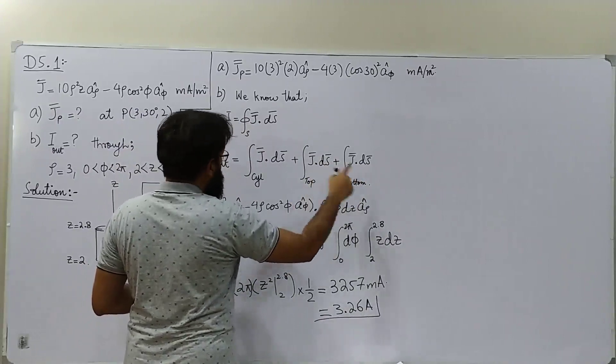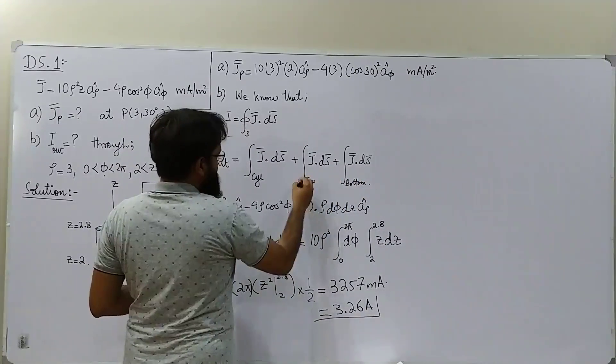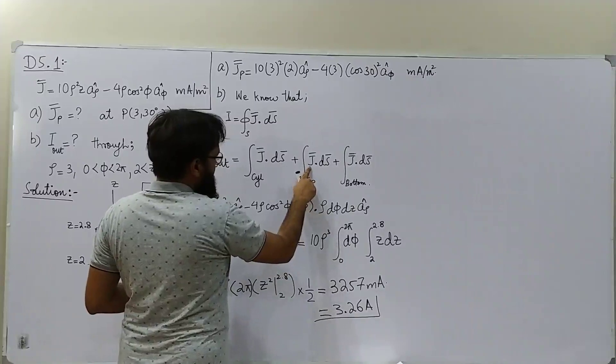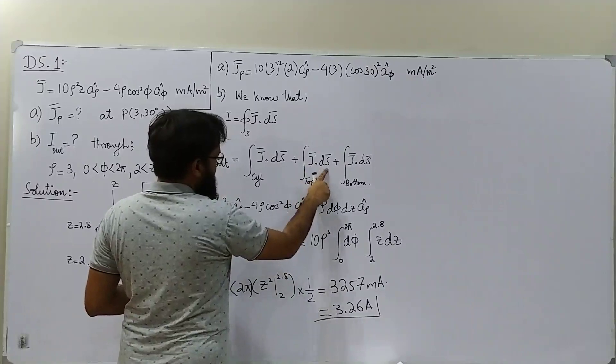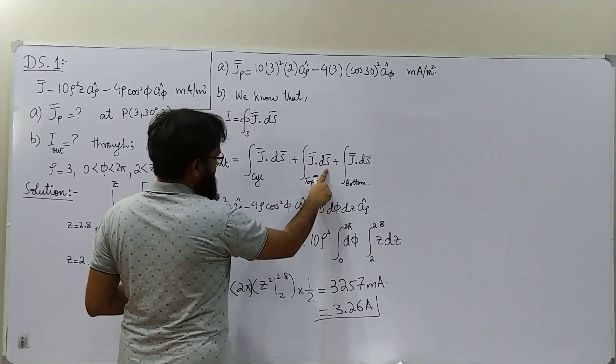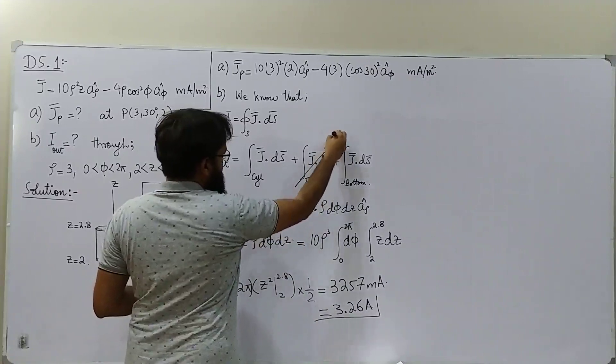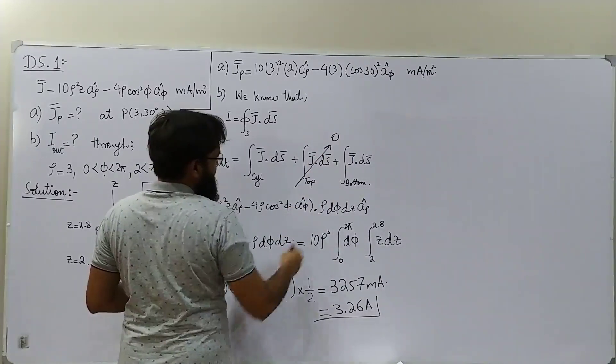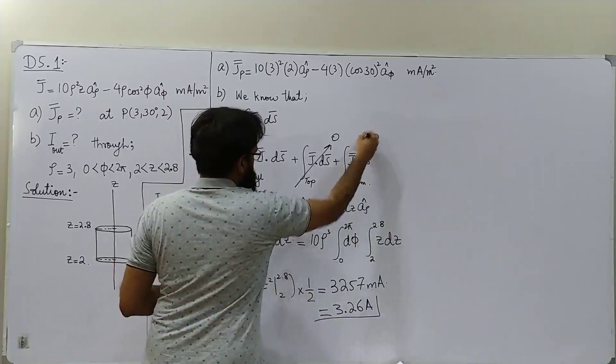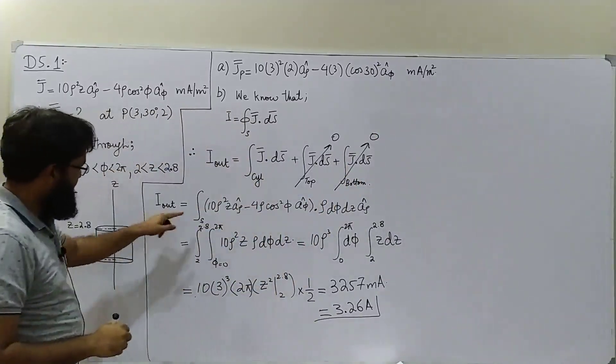So this J is on horizontal plane, this ds is perpendicular to that plane, so we don't need to evaluate this, same as the case with this one. So only this integral remains. Just replace the values of J here.